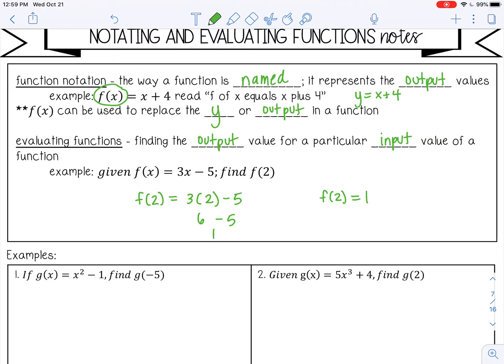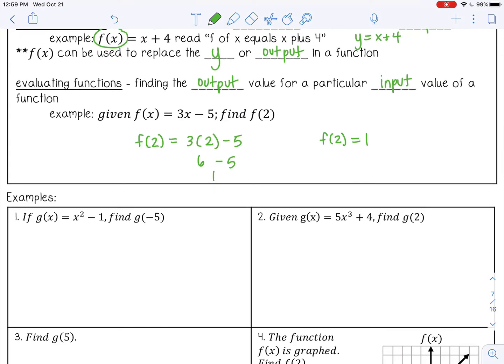Let's try some examples. Number 1 says, if g of x equals x squared minus 1, find g of negative 5. I'm just going to substitute in negative 5 for my x.